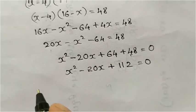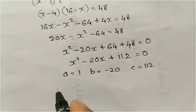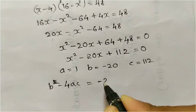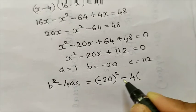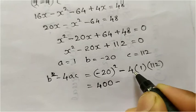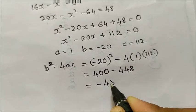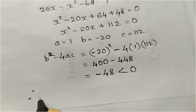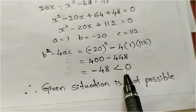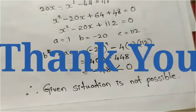Now find the discriminant using a equal to 1, b equal to minus 20, c equal to 112. Discriminant is b square minus 4ac: minus 20 whole square minus 4 times 1 times 112 equals 400 minus 448 equals minus 48, which is smaller than 0. Therefore, the given situation is not possible, because real roots do not exist since the discriminant is less than 0. The fifth question is for your practice. Thank you.